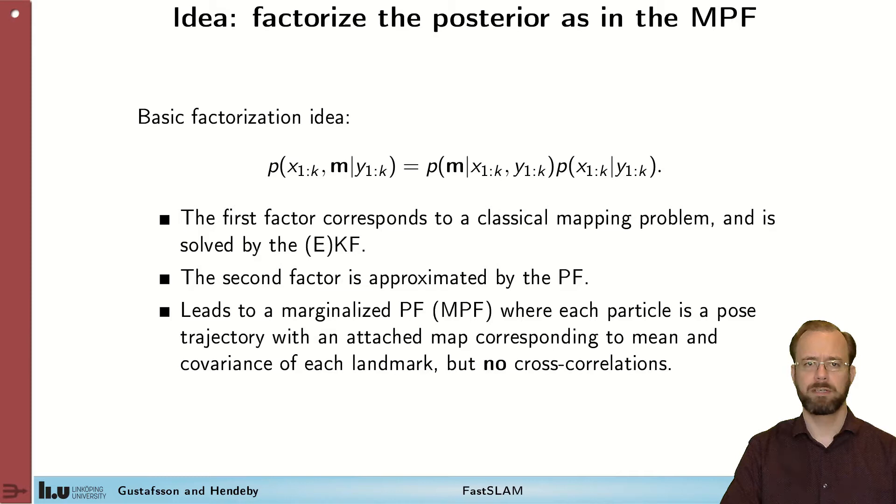Just as in the case of the marginalized particle filter, the key component to solve the problem is to factorize the posterior distribution in a proper way. So if we look at the posterior distribution here, it's the full trajectory of the sensor platform and the map given the measurements. It factorizes in two parts. One is the determination of the map given the trajectory and the measurements. And the second part is finding the trajectory given the measurements.